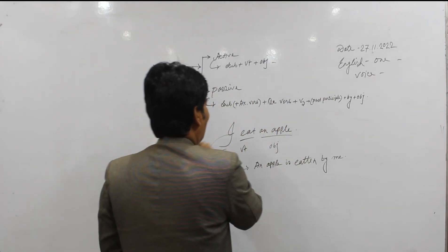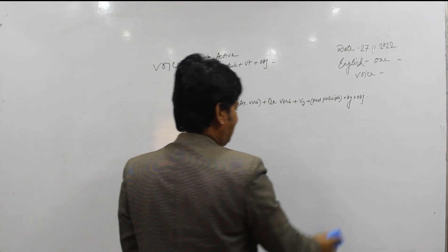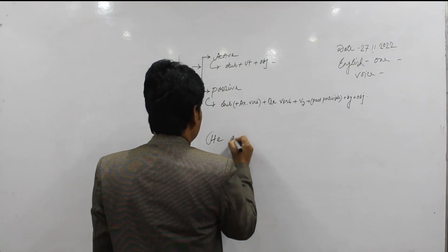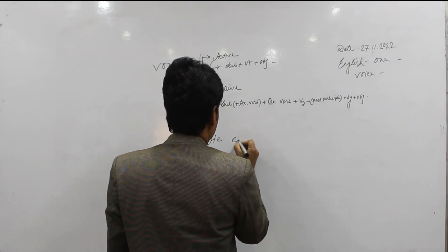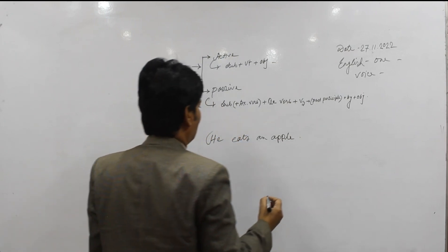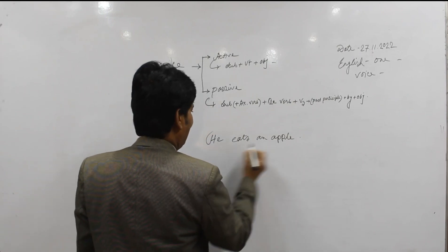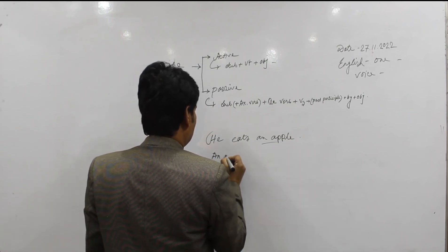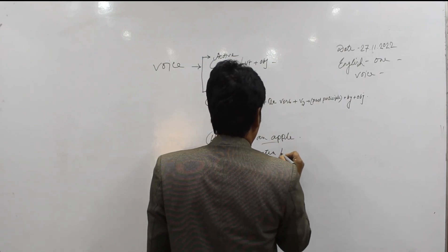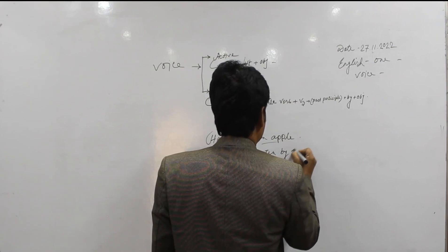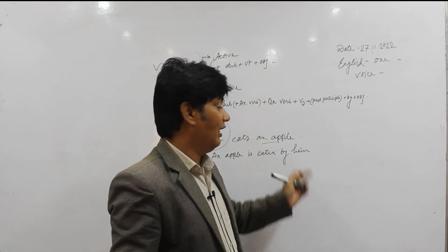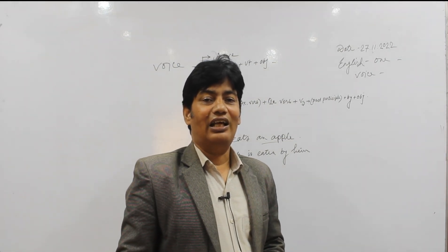We can write some more examples. If the sentence is 'He eats an apple', similarly 'an apple' should be used as the subject in the passive voice. The subject of active voice is 'he', so the objective form of 'he' — which is 'him' — is used. So the exact passive sentence would be: 'An apple is eaten by him.'